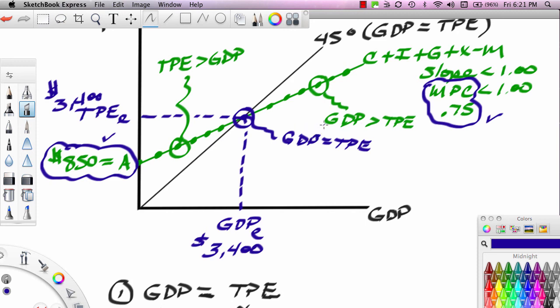All right. Well, this concludes the second part in a four-part series on the expenditure line. Now, in parts three and four, we're going to actually use this expenditure line to talk about how changes in spending affect GDP and unemployment. Stay tuned.